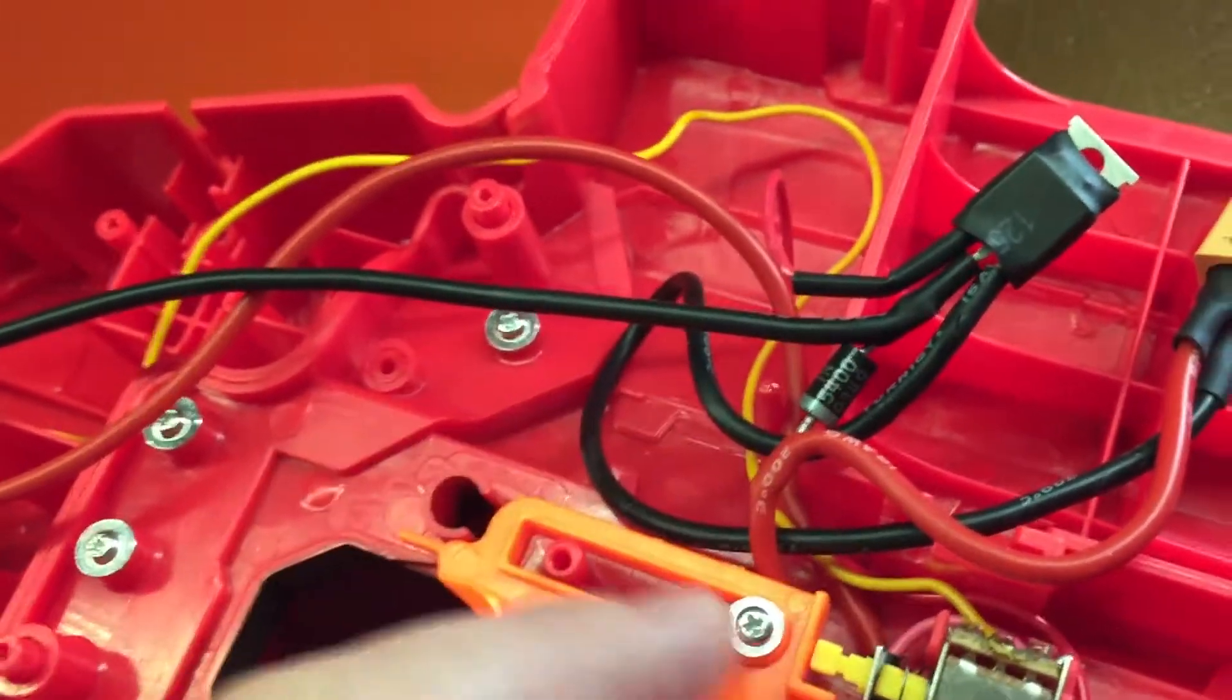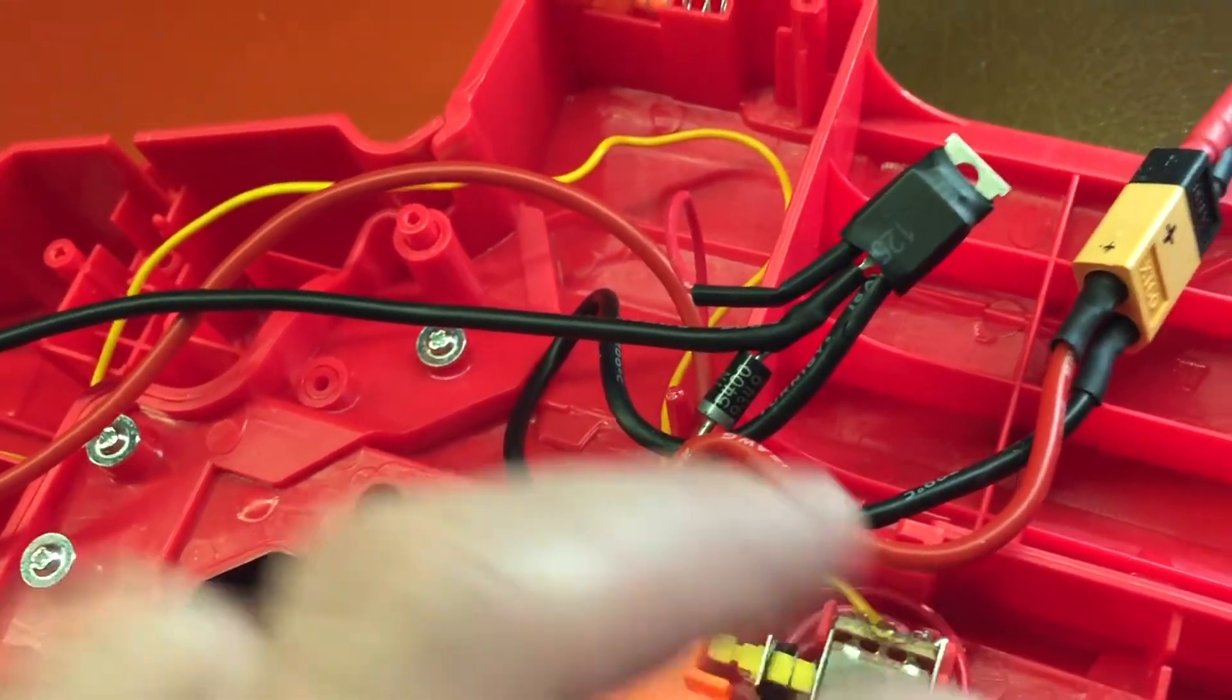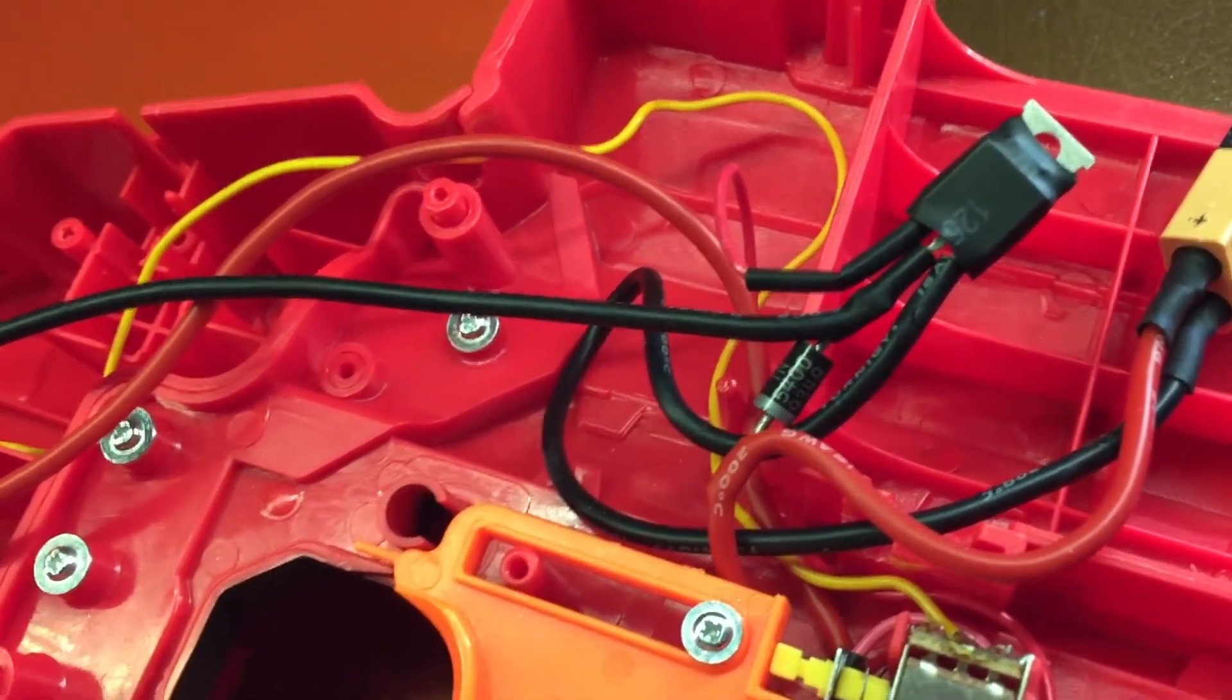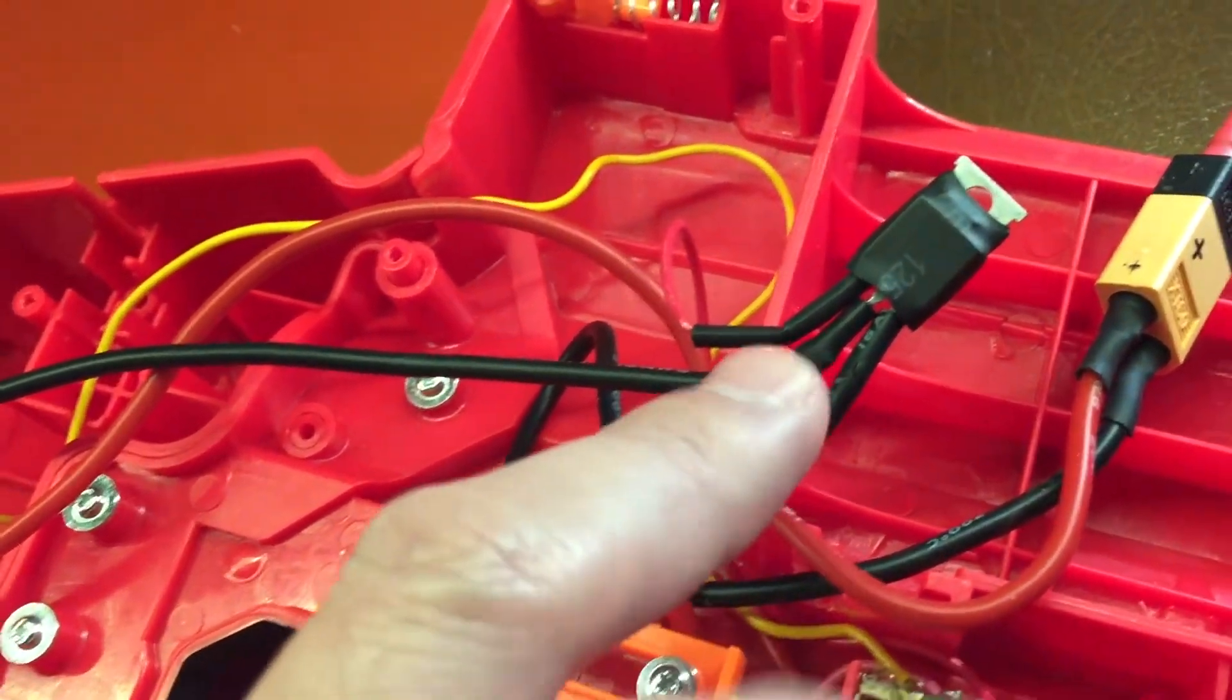The electrons naturally are going to flow from the positive to the negative. On a zener diode or a reverse diode, when the power hits a certain point then the flow of electrons can actually go in the opposite direction.